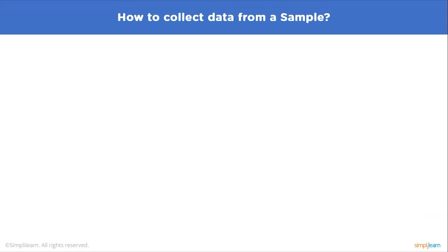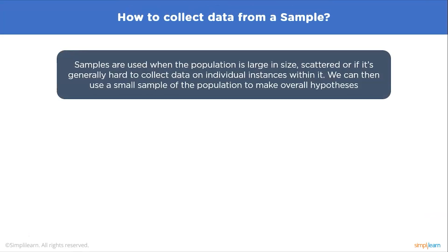And for that, we can collect data from a sample. How do we go about collecting data from a sample? Samples are used when the population is large in size, scattered, or it's generally hard to collect data on individual instances within it. We can use a small sample of the population to make overall hypotheses.